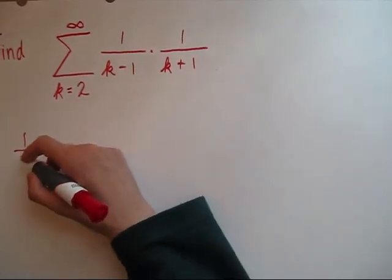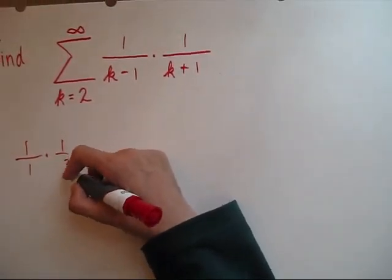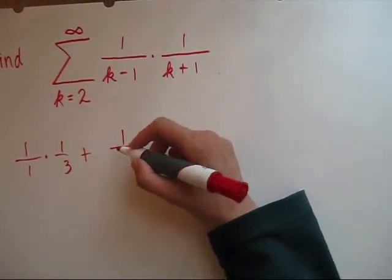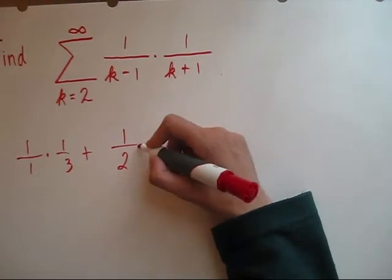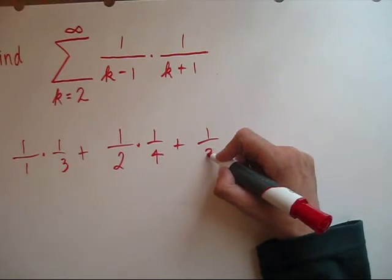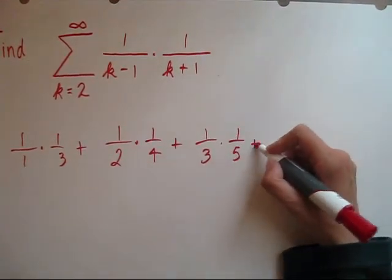We're going to get 1 over 2 minus 1, which is 1 times 1 third, plus, now plug in k equals 3. 3 minus 1 is 2, and this goes up to a fourth, plus, and we have a 1 third times a 1 fifth, etc.